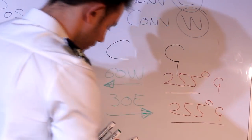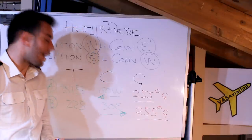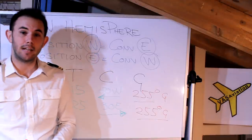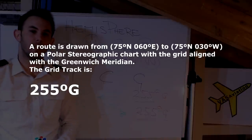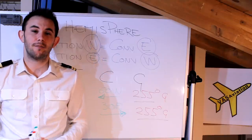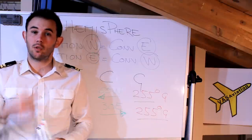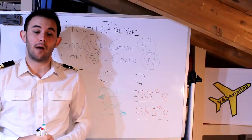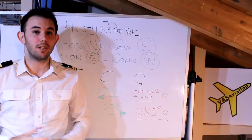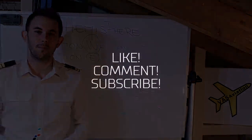We clearly conclude that the grid track and the answer for this question is 255 degrees. That's it for today. I hope it was helpful. If you have any suggestions, questions, or doubts, let me know in the comments and I will try to help you out. As always, thanks for watching. Squawk VFR, frequency change approved, and see you in the next one.